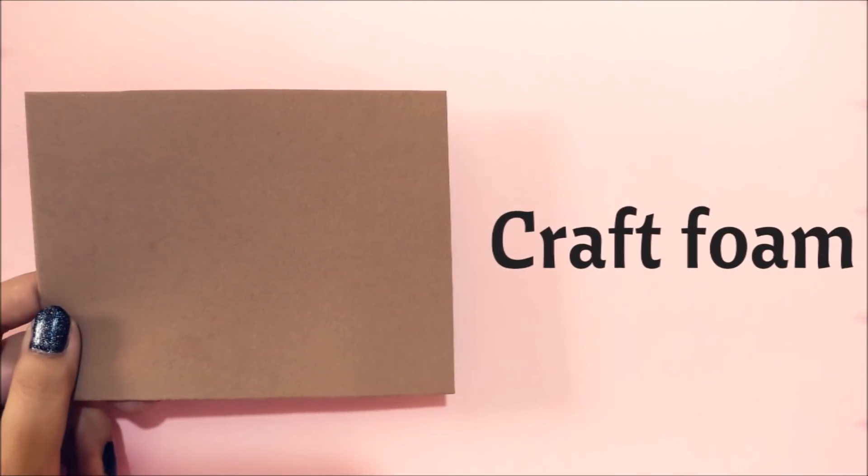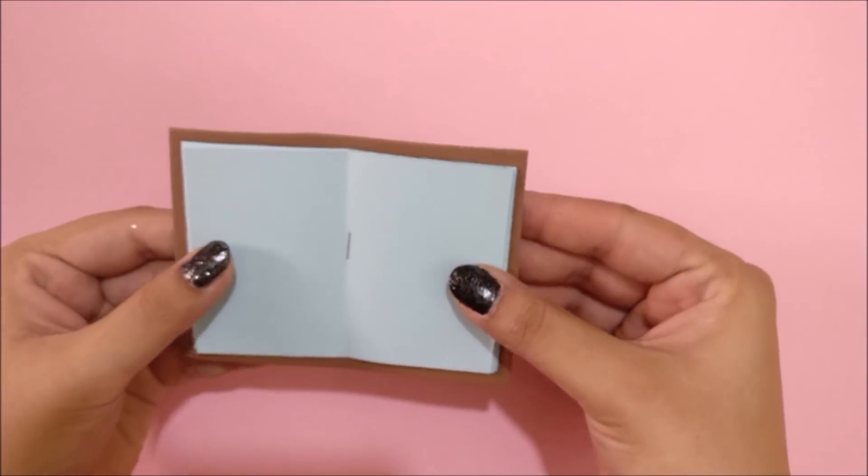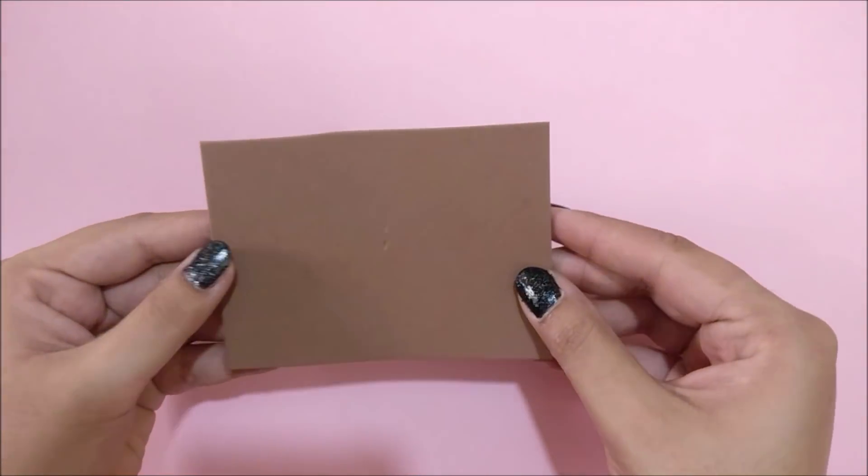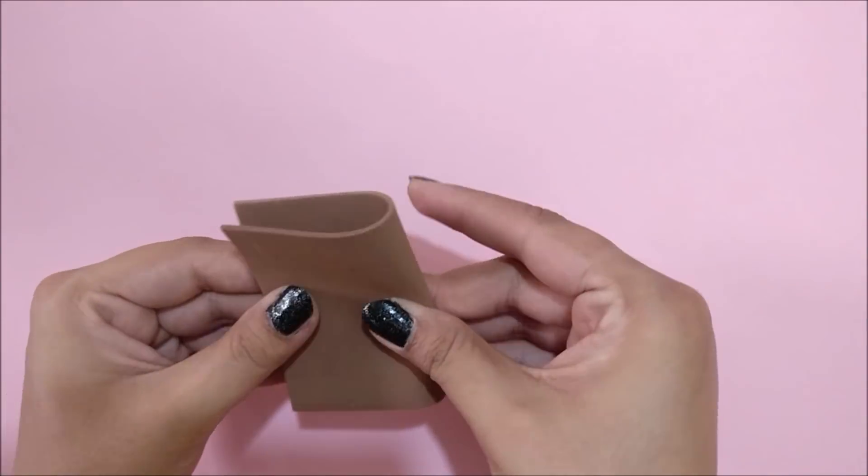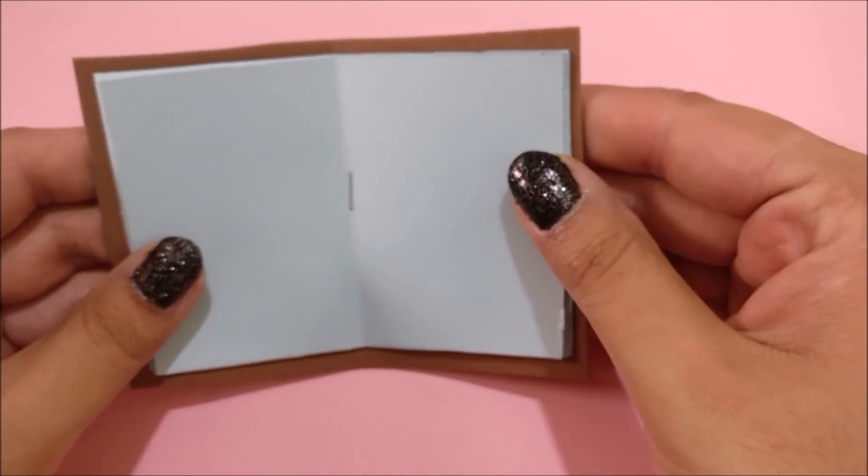To make the cover, I took this craft foam in brown color. This foam is slightly larger than the pages we made earlier. Then fold this foam in half. If you don't find similar craft foam, then you can use brown cardstock as well.